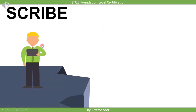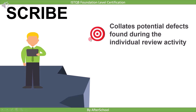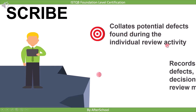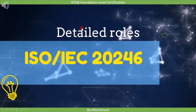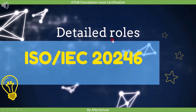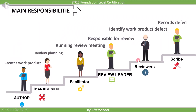The scribe collates potential defects found during the individual review activity and records new potential defects, open points, and decisions from the review meeting. For more detail on roles and responsibilities, refer to ISO/IEC 20246. In summary: author creates the work product; management plans the review; facilitator runs the review meeting; review leader is responsible for the review; reviewer identifies defects; and scribe records defects.